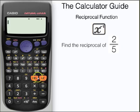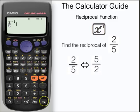Let's find the reciprocal of two fifths now. Input two fifths and then the x to the power of minus 1 button. Don't forget to use the replay button to make sure that your cursor is centered. And here we have the reciprocal of two fifths, 5 over 2.